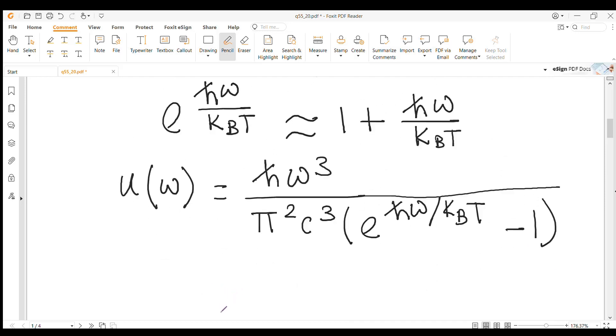At long wavelength limit we write e to the power h bar omega by kT as 1 plus h bar omega by kT. So we replace e to the power h bar omega by kT by 1 plus h bar omega by kT in the long wavelength limit.